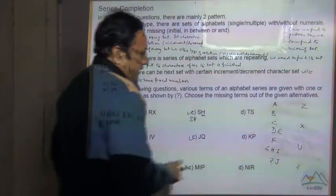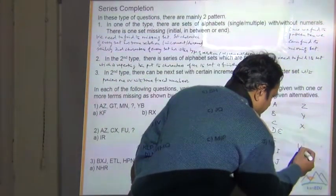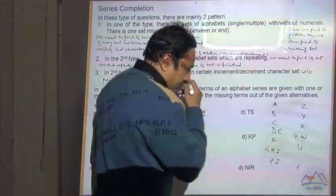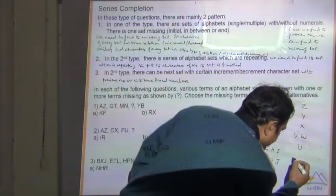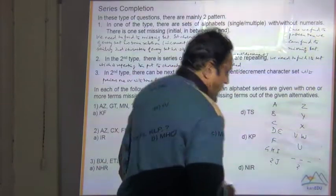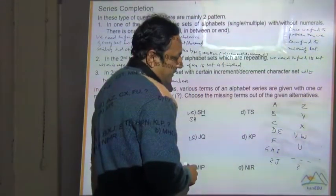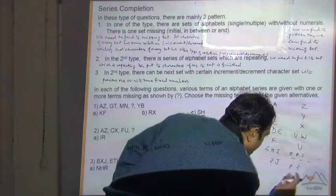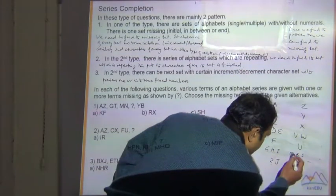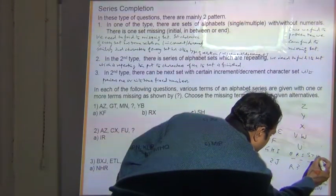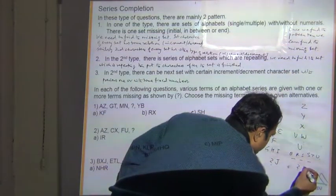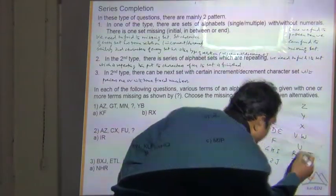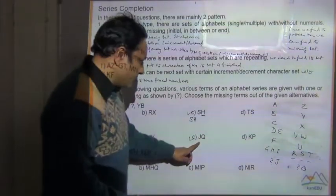Now for the second character pattern: Z, X, U, then question mark. From Z to X is 2 characters back; from X to U is 3 characters back. So the next step should be 4 characters back. Checking: Q, R, S, T, U — going back 4 from U gives Q. So the second character is Q. The answer for Question 2 is JQ.